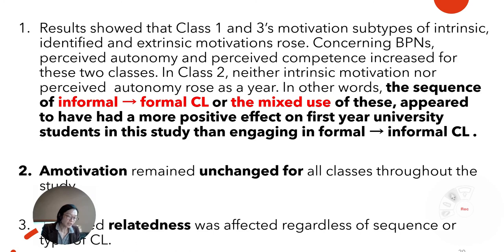Results showed that Class 1 and 3's motivation subtypes of intrinsic, identified, and extrinsic motivations rose over the year. Concerning BPNs, perceived autonomy and perceived competence increased for these two classes. In Class 2, neither intrinsic motivation nor perceived autonomy rose over the year. In other words, the sequence of informal then formal cooperative learning, or the mixed use of these, appeared to have had a more positive effect on first-year university students than engaging in formal then informal cooperative learning. Amotivation remained unchanged for all classes throughout the study. Furthermore, perceived relatedness was affected regardless of sequence or type of cooperative learning.